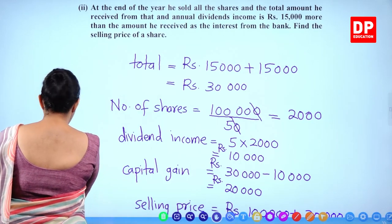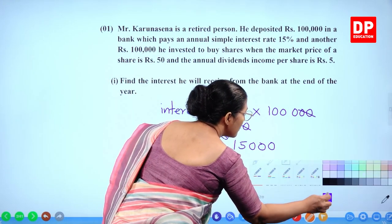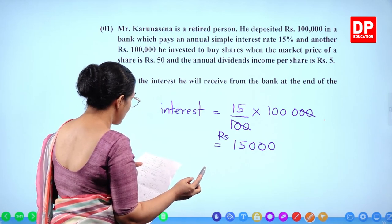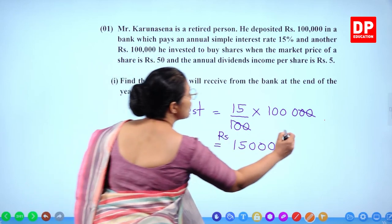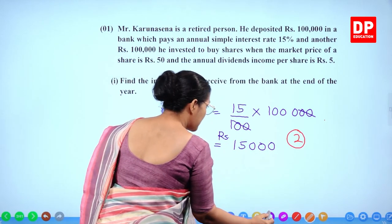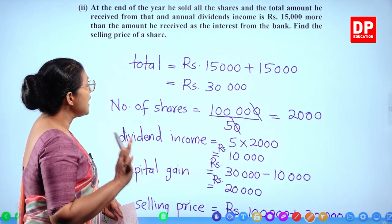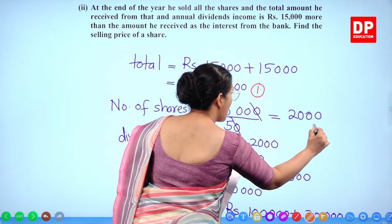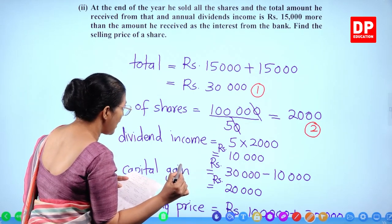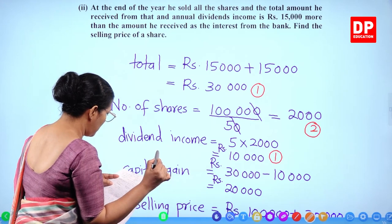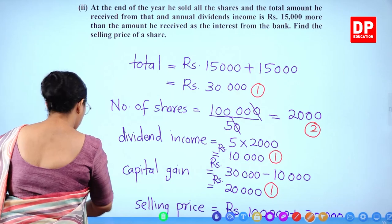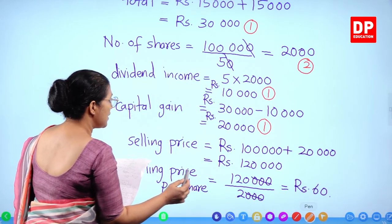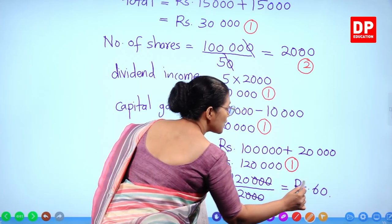For marking: the first part gets 2 marks. Then 1 mark for finding the number of shares, 2 marks for the total received and dividend income calculation, 1 mark for capital gain, 1 mark for finding the selling price per share.